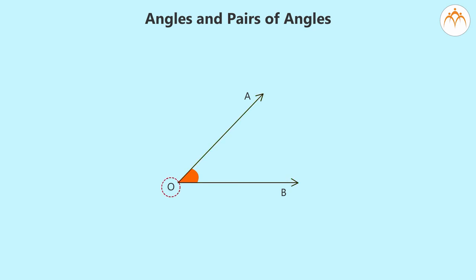Ray O-A and ray O-B have a common starting point or vertex called O due to which an angle A-O-B gets formed.